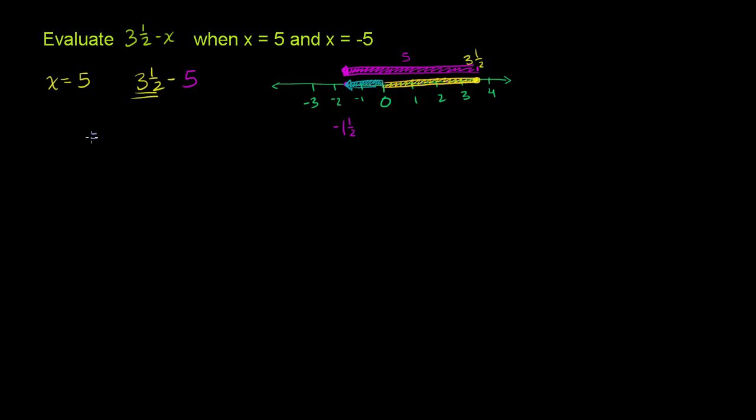And so you can literally view this, you can say that this is the same thing as the negative of, and we know it's going to be a negative number because we were subtracting a larger number from a smaller number. It's the negative of, you take the larger number, 5 minus 3½.